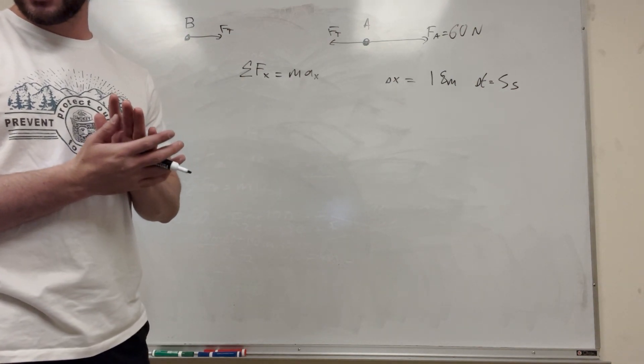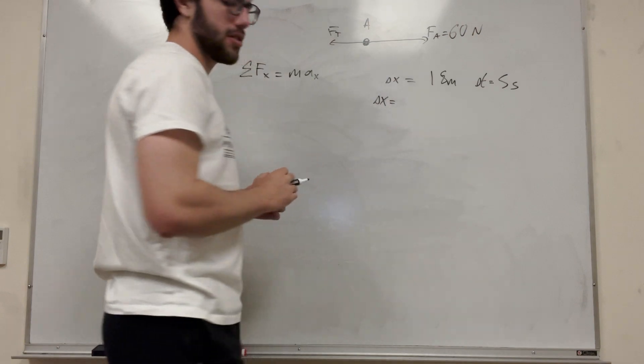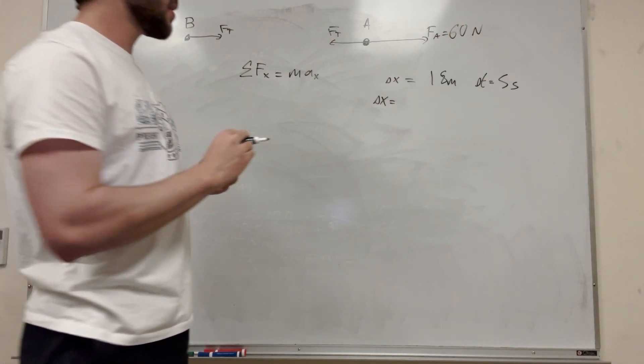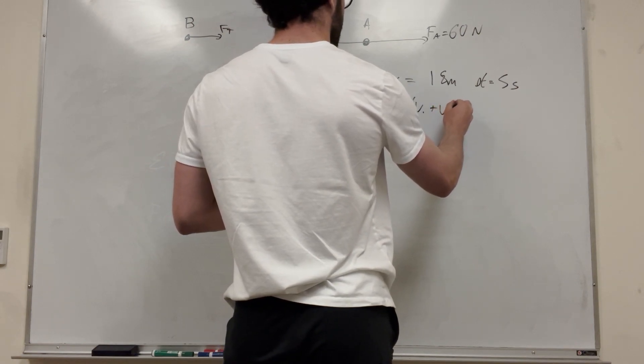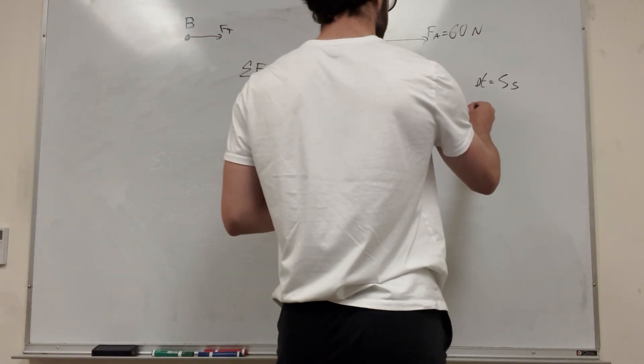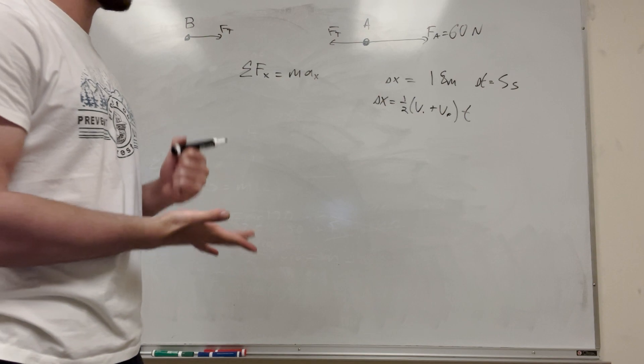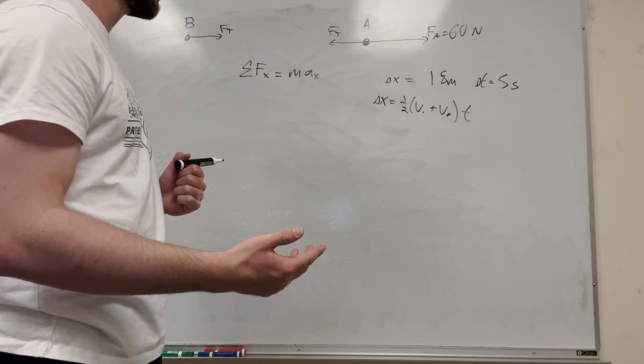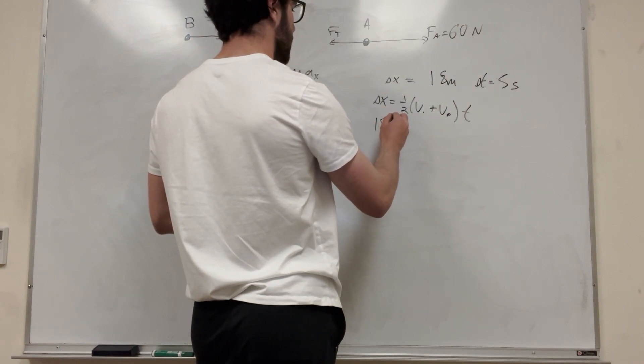So our formula for this, we know that our change in x is equal to 1 half velocity initial plus velocity final times time. This is our formula here. So we're going to try to find velocity final. Now we can use velocity final to find acceleration.